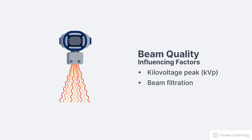The x-ray beam quality or penetrability is influenced by only two exposure factors: the kVp and the filtration. It's important to know that the quality or energy is in no way affected by the other exposure factors like the mA, the time, the distance, or anything else. It's only the kVp and filtration that affect beam quality.